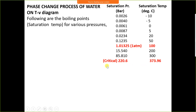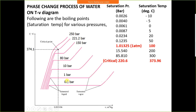On the T-V diagram, at 0.1 bar, a small amount of sensible heat raises water to saturation temperature; then latent heat converts it to saturated vapour. The horizontal line represents latent heat and the inclined line represents sensible heat. As pressure increases, sensible heat supplied to water increases but latent heat decreases.